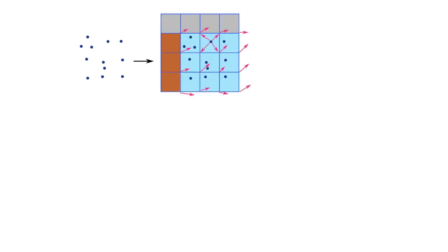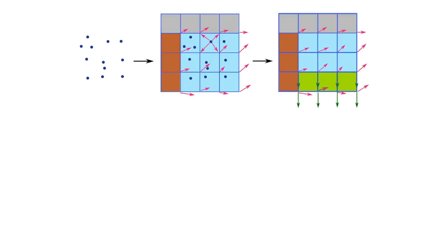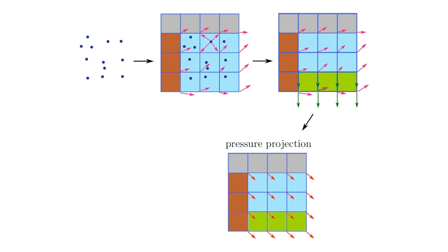In a fluid step, particles first transfer mass and momentum to the fluid grid. We compute the fluid sediment drag force at grid regions that overlap with the sediment. Then, we apply a pressure projection to enforce incompressibility for the particle-laden mixture. The resulting velocities are transferred back to particles for their advection.